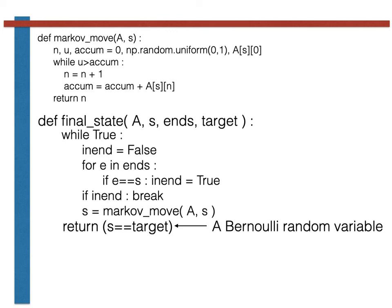Consequently, the mean that I get when I call final_state and average it is an estimator for the hitting probability that I desire.